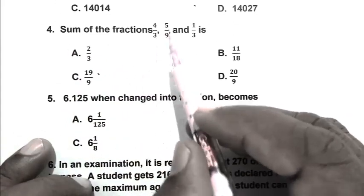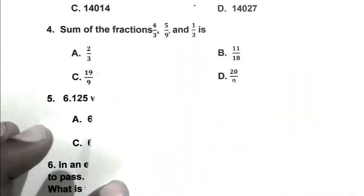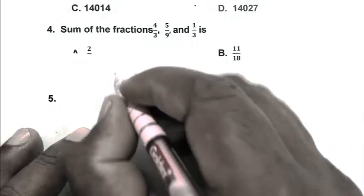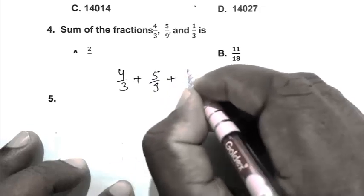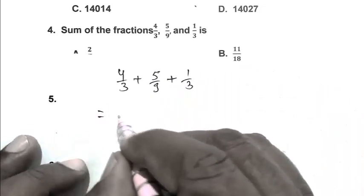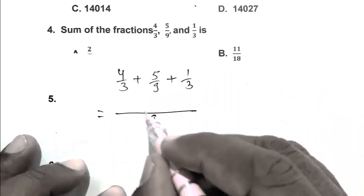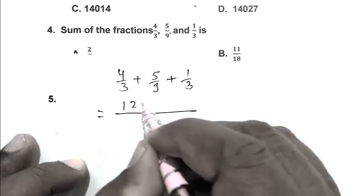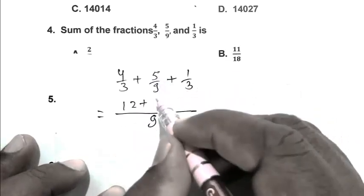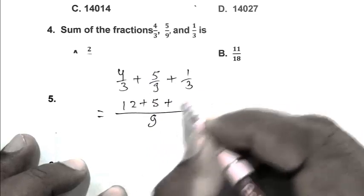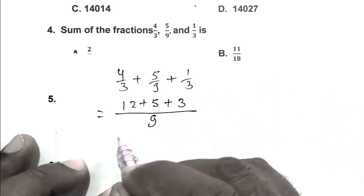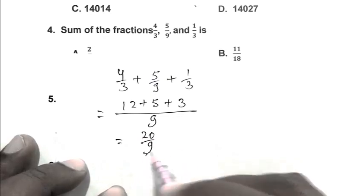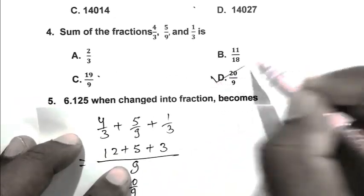Question number 4. Sum of the fractions 4 upon 3, 5 upon 9 and 1 upon 3 is. So friend, 4 upon 3 plus 5 upon 9 plus 1 upon 3. So 9 as a LCM. So 12, 5, 1 into 5 that is 5 plus 3, 3 multiplied by 1 that is 3. That is 20 upon 9. So D is the right answer.